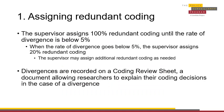The first step in redundant coding consists of assigning redundant coding to the project's researchers. 100% of jurisdictions should be redundantly coded until the rate of divergence between researchers goes below 5%. Then, the researcher can reduce the rate of redundant coding to 20% of jurisdictions.